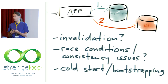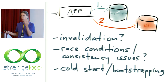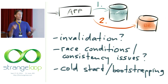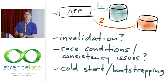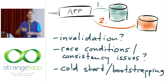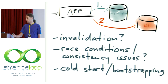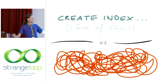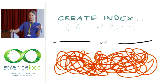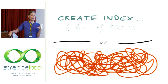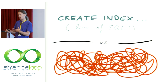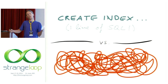Another issue is cold start. If you reboot your Memcached servers and they lose their entire contents, suddenly every single request is a cache miss, every request is hitting the database, and your database is overloaded. Contrast that to creating a secondary index — which is one line of SQL, the database handles it automatically, keeps everything up to date, and it works beautifully. Contrast that to this kind of application-level cache management, which is just a complete mess.